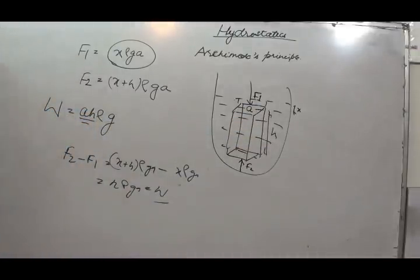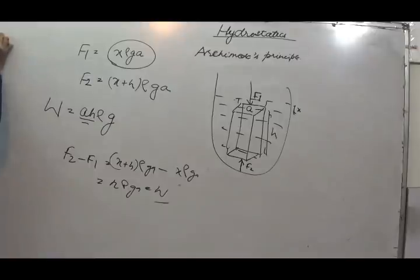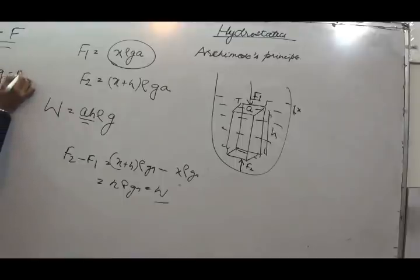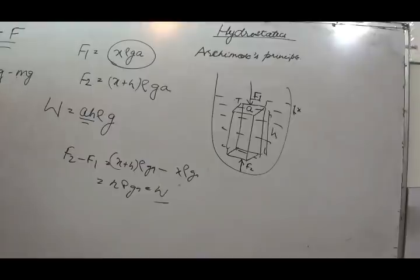Now, if this is the Archimedes principle, let us derive what is the net weight of the object. F is the force exerted on the body, W is the true weight, then the total net weight will be W minus F, which equals Mg minus mg, where small m is the mass of water displaced and capital M is the true mass of the body. This gives us the apparent weight.